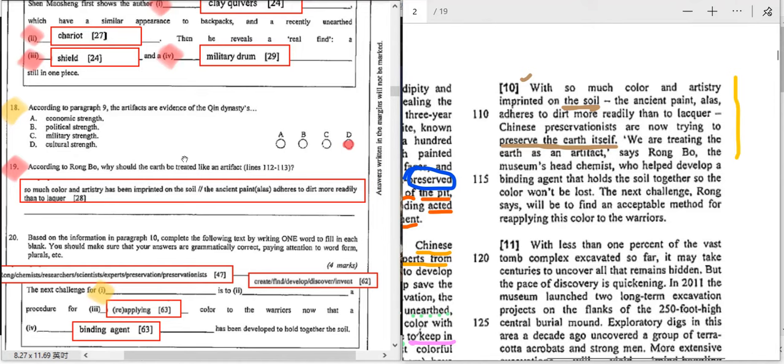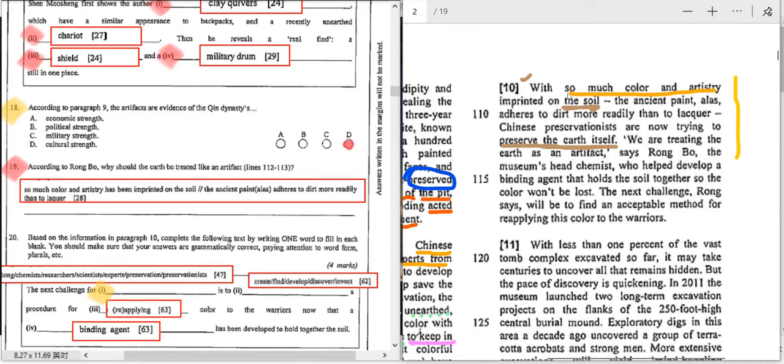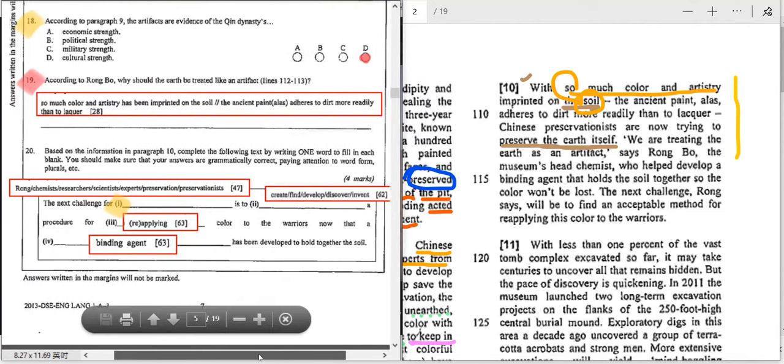It's all about the earth, the soil. Why should we preserve, protect the earth as if it were an artifact itself? Now, the answer is right here. But you need to rephrase it in your own words. There's so much color and artistry imprinted on the soil. The soil itself has so much color and artistry in itself. And the ancient paint adheres to dirt more readily than to lacquer. And therefore, the experts are now trying to preserve the earth itself. Because so much color and artistry can be found in the soil, we have to protect it.